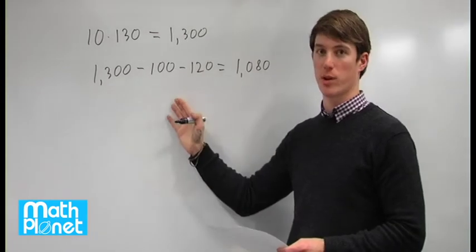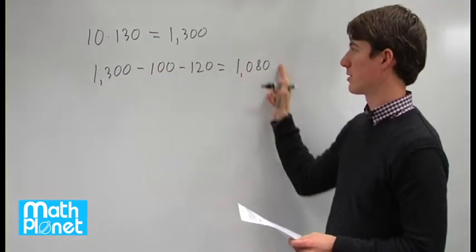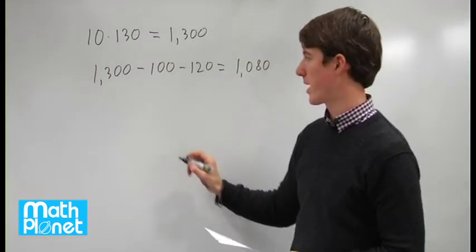Now we have eight points instead of 10, but we want to find the new average, the average of this sum here. So this number, instead of divided by 10, now divided by 8.